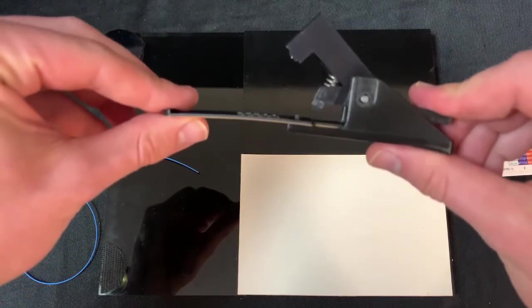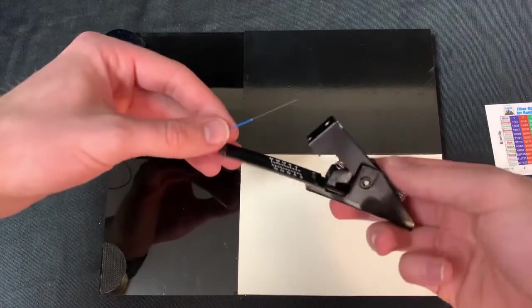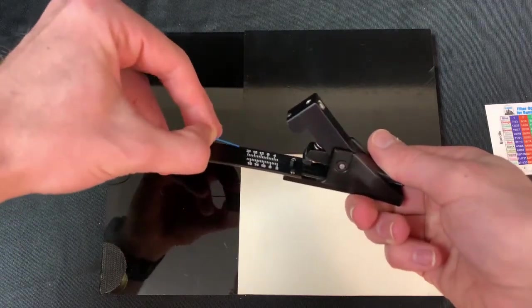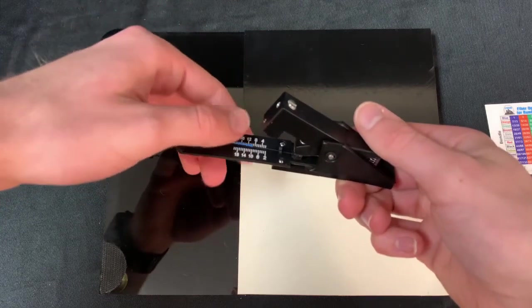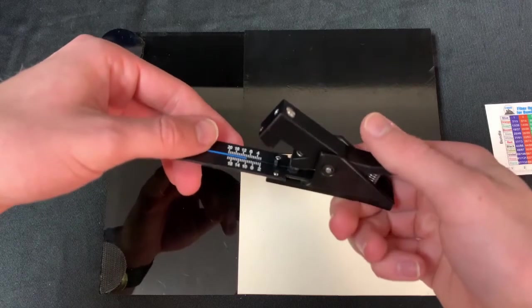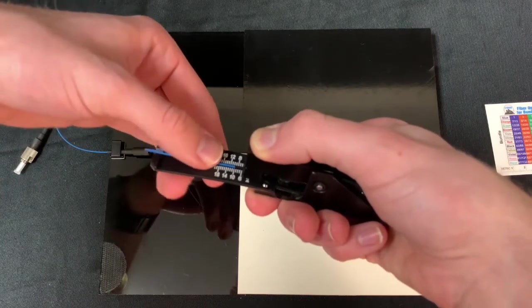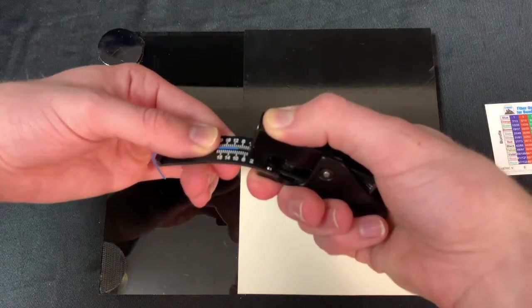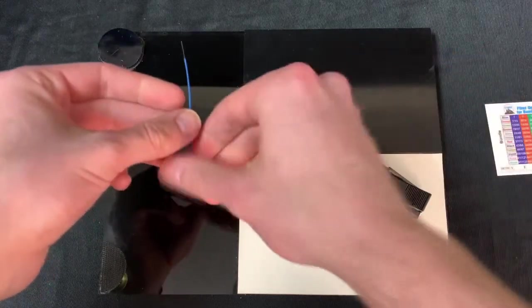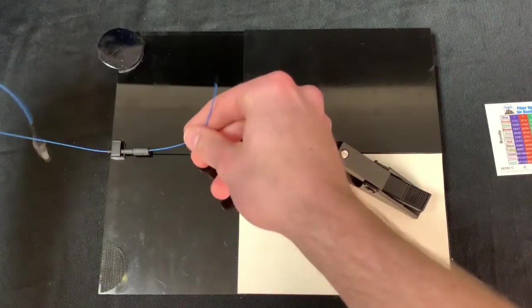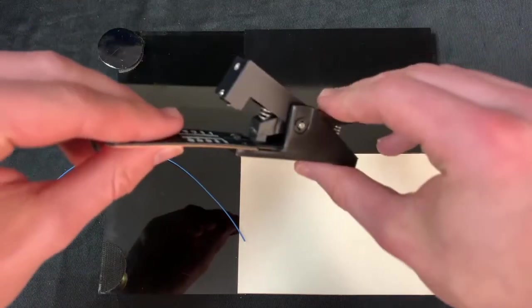Now while cleaving your fiber, don't forget that the cable jacket lines up where you're going to be cleaving. So for this we'll be cleaving 10mm, so our cable jacket is going to line up with the 10 on the bendable measurement arm.